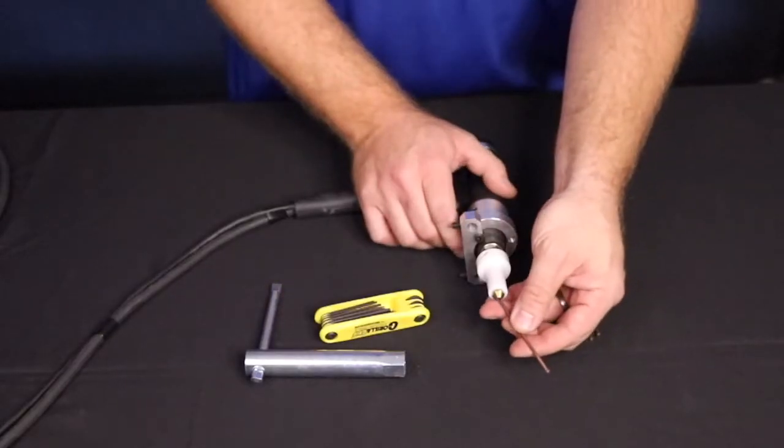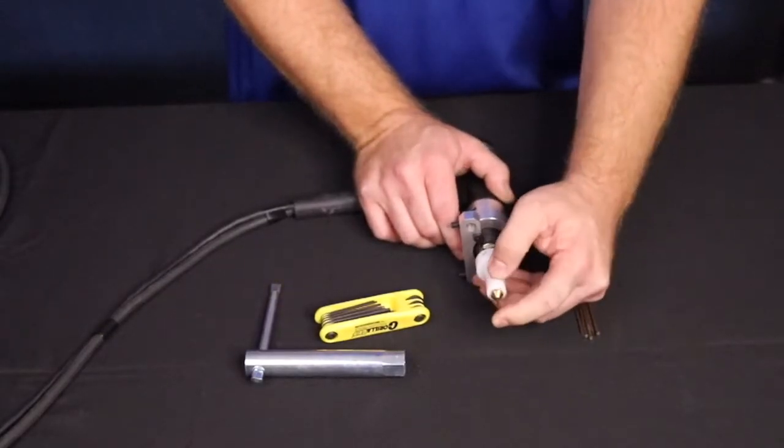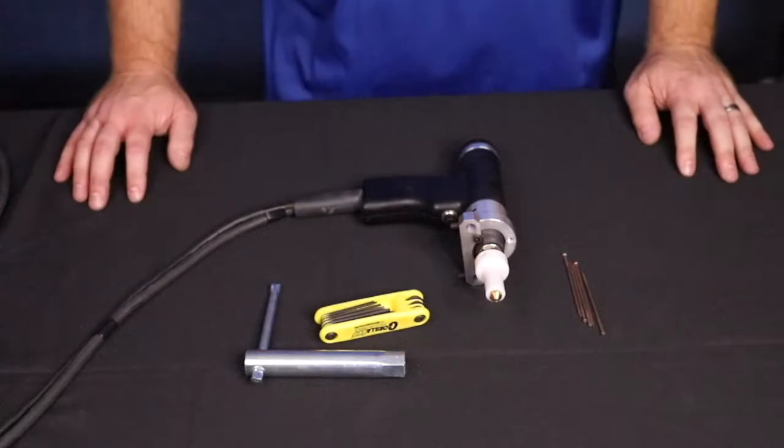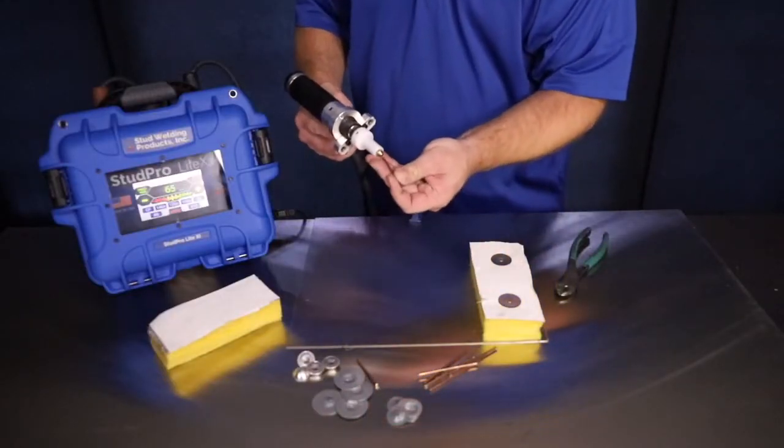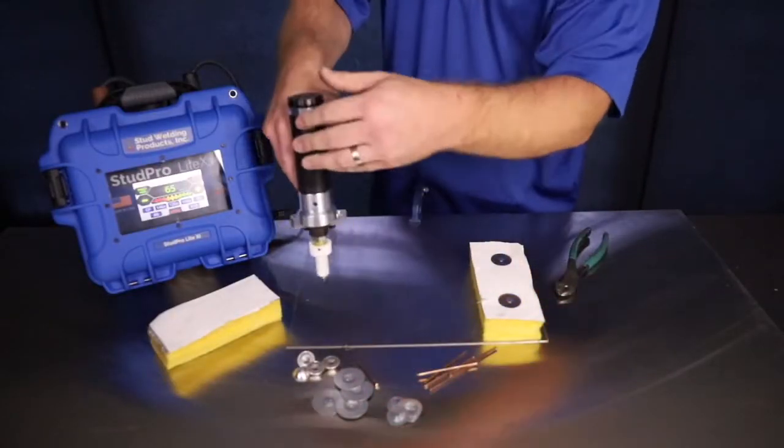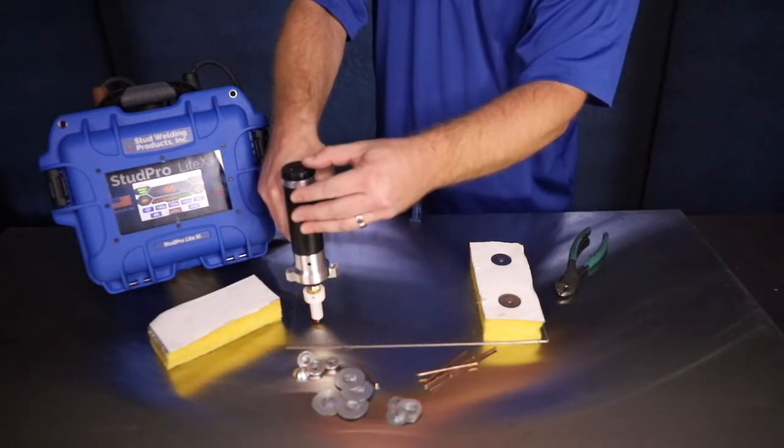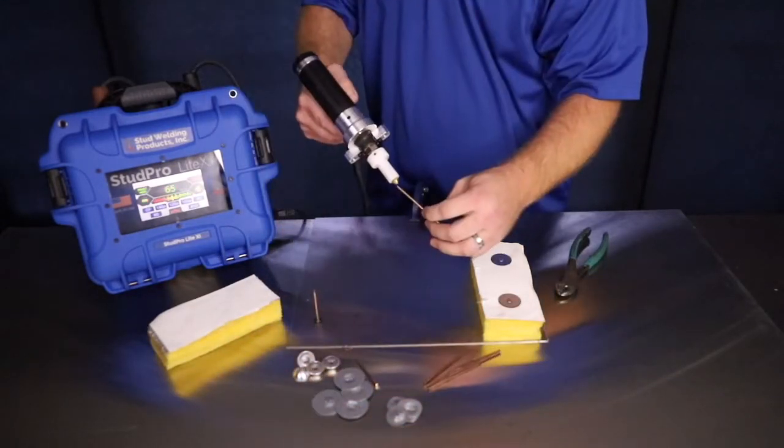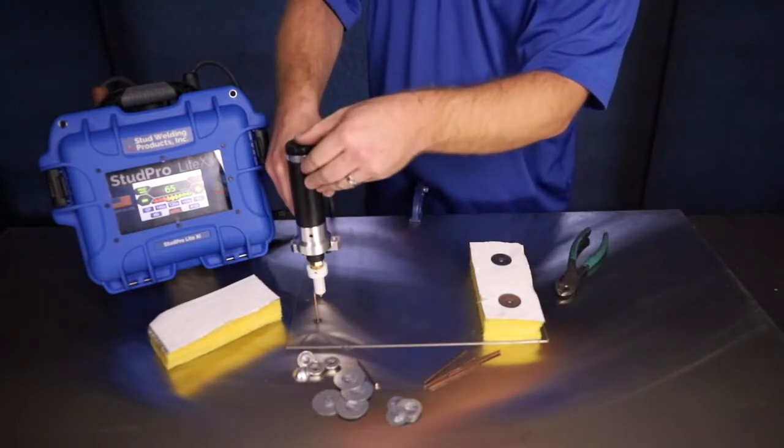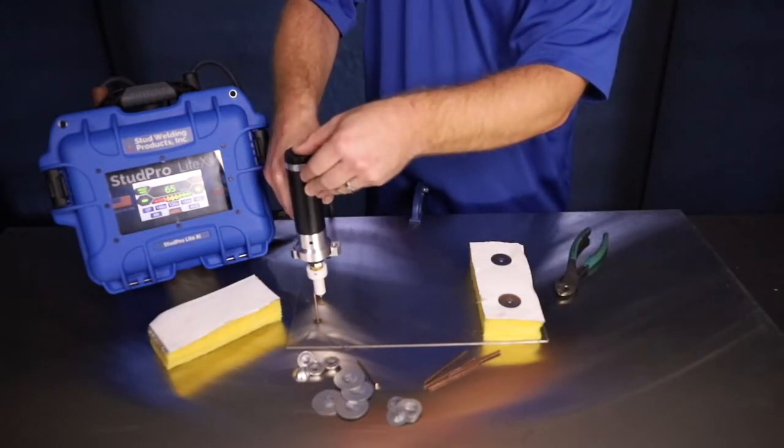To apply weld pins, fully insert the weld pin through the tip of the collar protector. The weld pin will engage the collet inside the protector. Use the floating technique, as demonstrated here. Apply moderate pressure to compress the gun shaft, but do not compress the shaft fully. Depress the trigger when you are ready to weld.